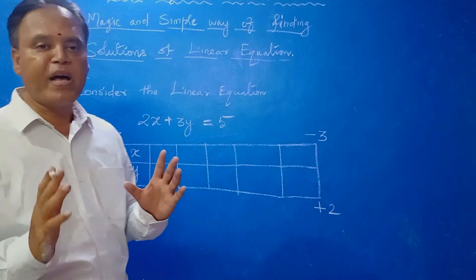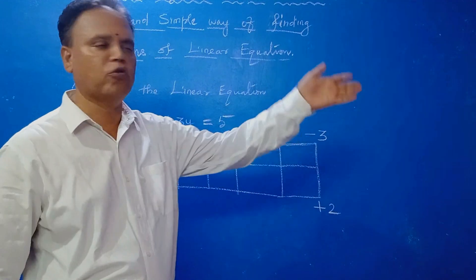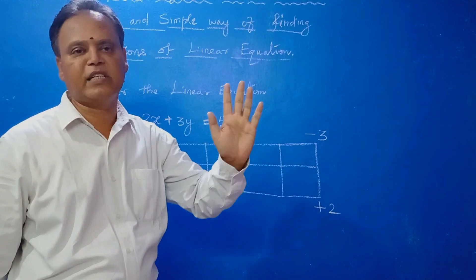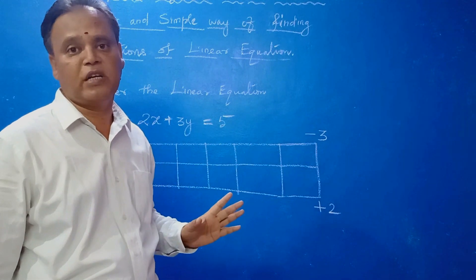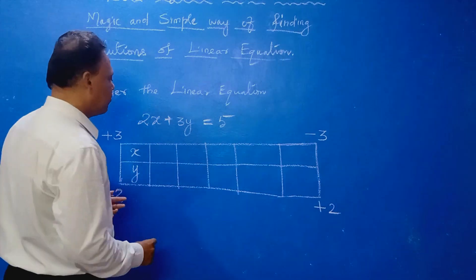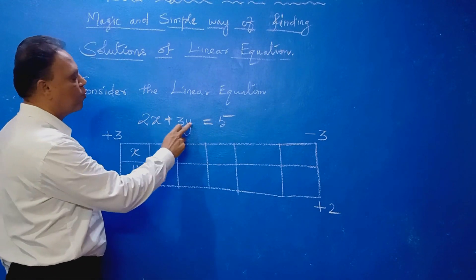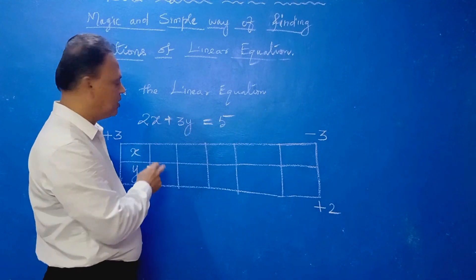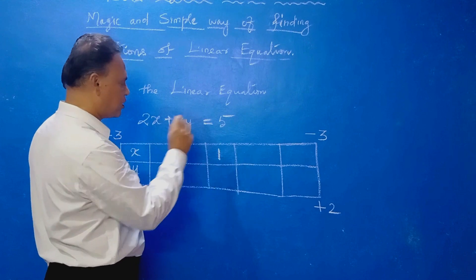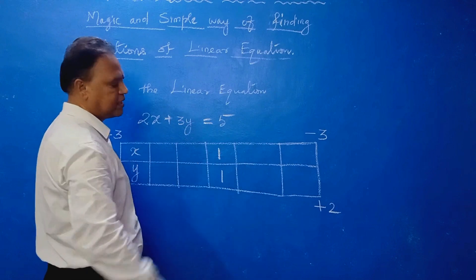Now you see the magic. Only one solution is enough — we can find out many solutions, infinitely many solutions. That we are going to find out the magic way. First I am finding one solution very easily. X is 1, y is 1. This is satisfied — 2 plus 3 equals 5. Yes, satisfied.